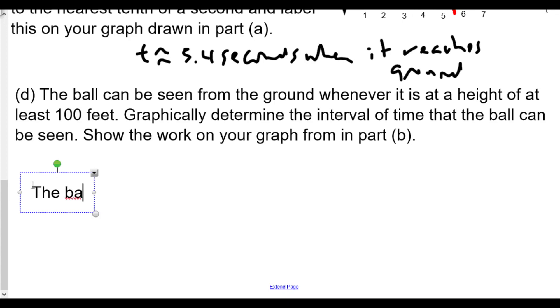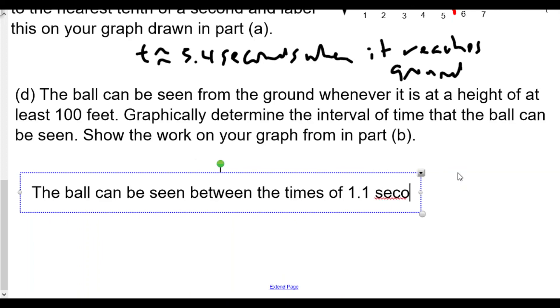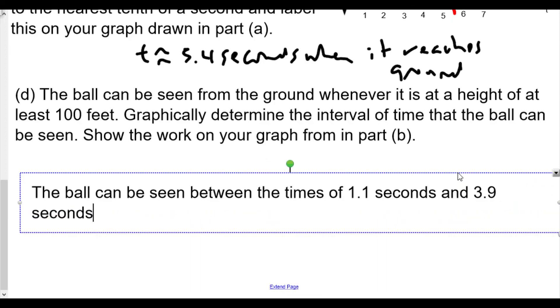We go back to the problem here. It says graphically determine when the ball can be seen, show your work. When can the ball be seen? The ball can be seen between the times of, I'm going to round this to the nearest tenth of a second, so we'll say 1.1 seconds, between 1.1 seconds and 3.9 seconds.